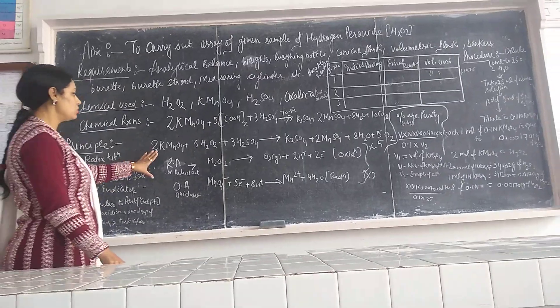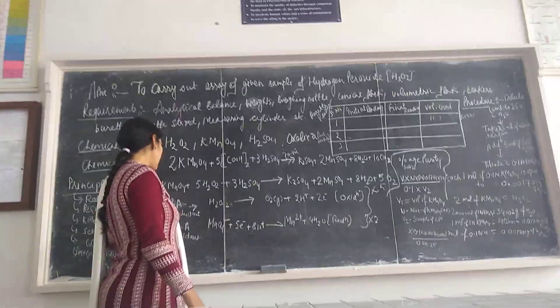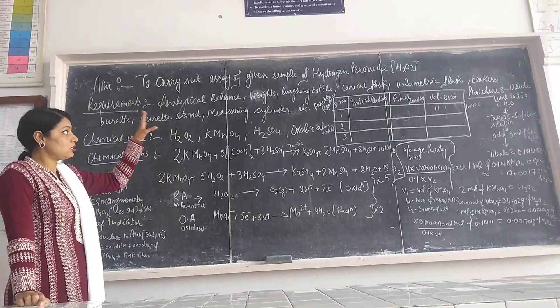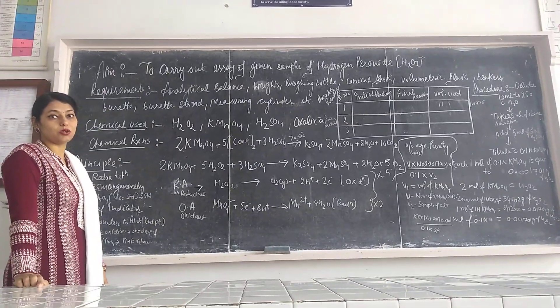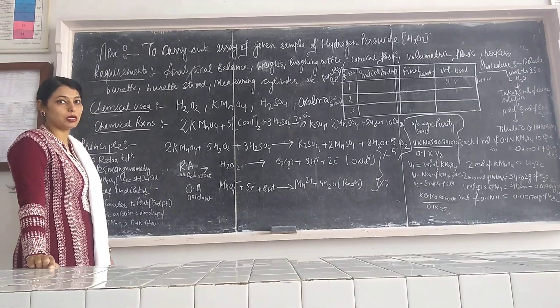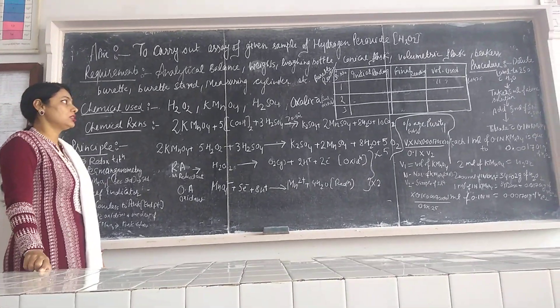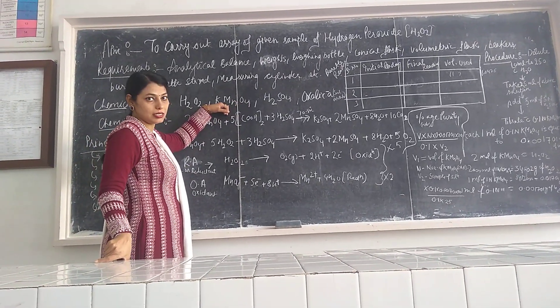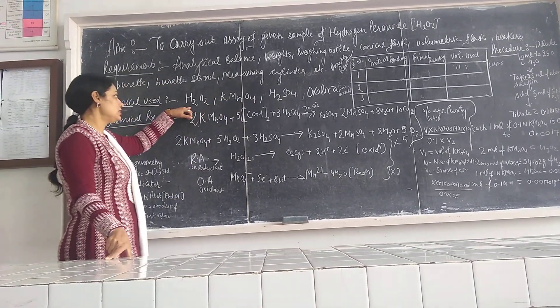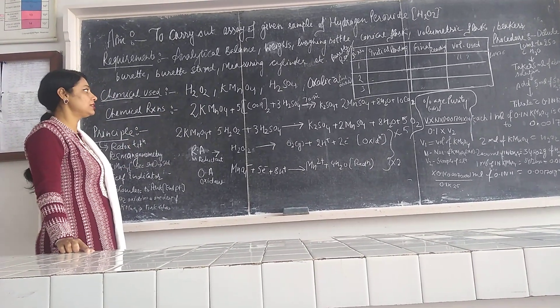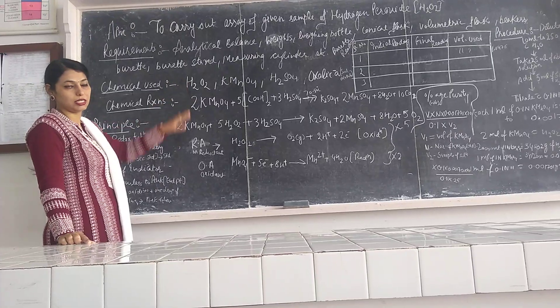So these are the two basic reactions that our assay of hydrogen peroxide is based on: the redox titrations. Redox titrations, particularly permanganometry, means here our KMnO4 will act as an oxidizing agent.